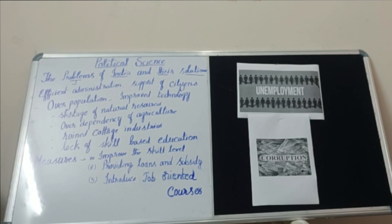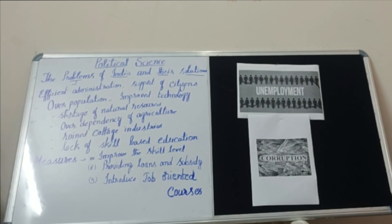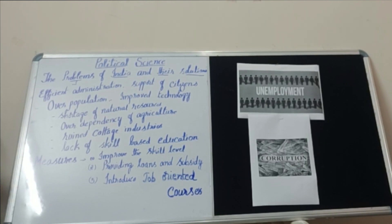Next is over-dependency on agriculture. Children, you all know India is an agricultural country and the majority of people living in villages depend upon agriculture. Indian agriculture is said to be a gamble with monsoon, as monsoon in India is seasonal and unevenly distributed. In such cases, more than 70% of people are depending on agriculture, yet the yield from agriculture is just 20.5%. So we can say over-dependency on agriculture is also one of the reasons for unemployment.